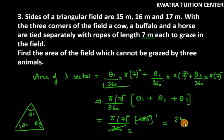So now we have pi. Pi can be written as 22 over 7 and we have 7 square over 2. 2 can cancel from 22, it's 11. 7 can cancel from 7 square. So area of 3 sectors is 77 meter square.